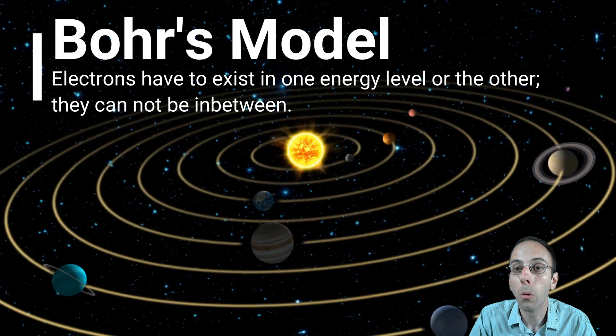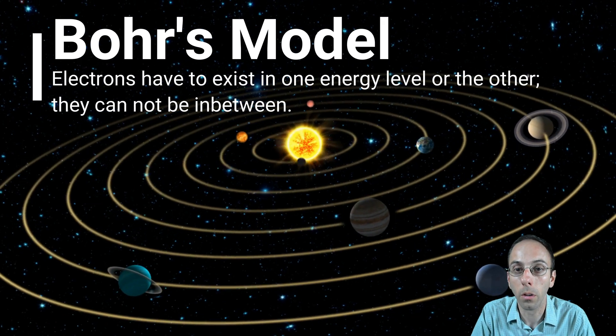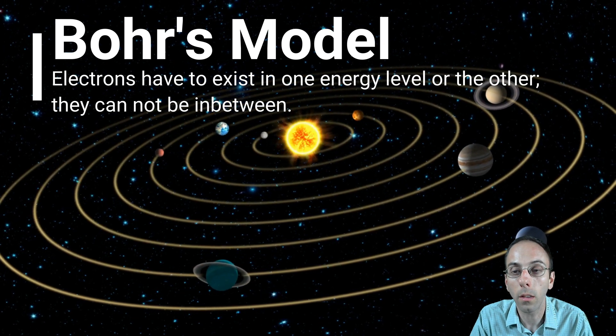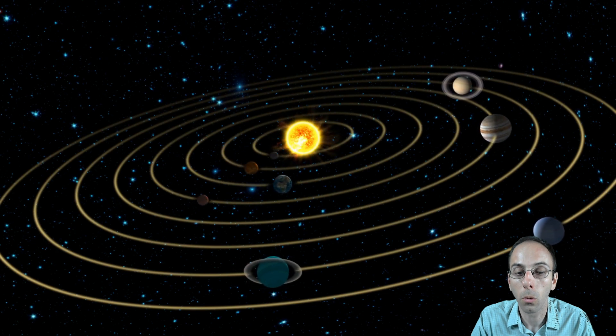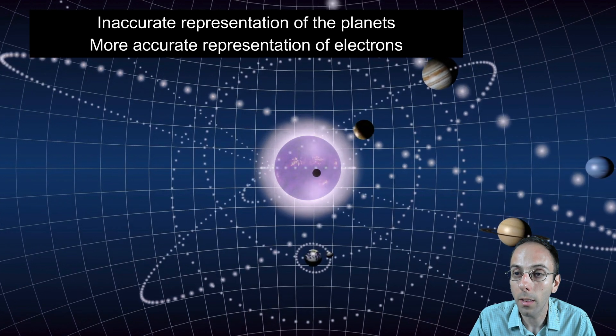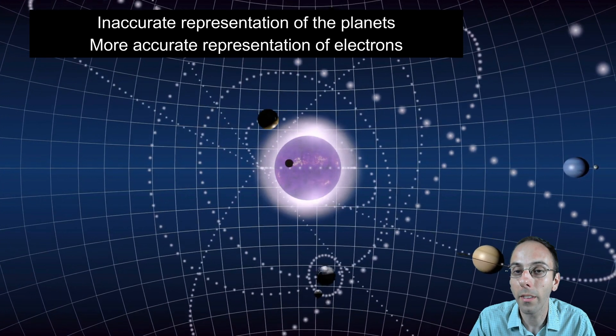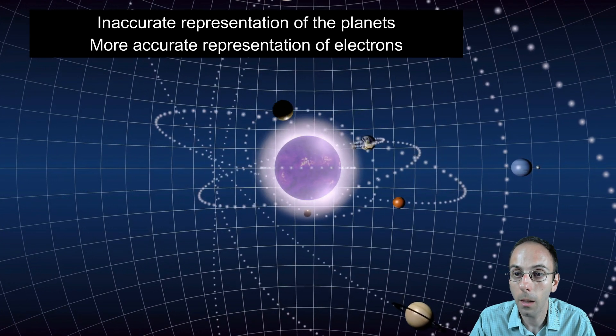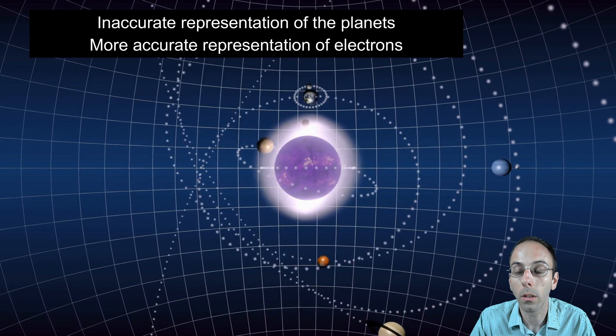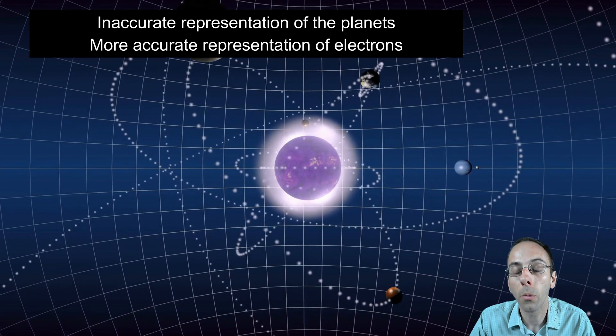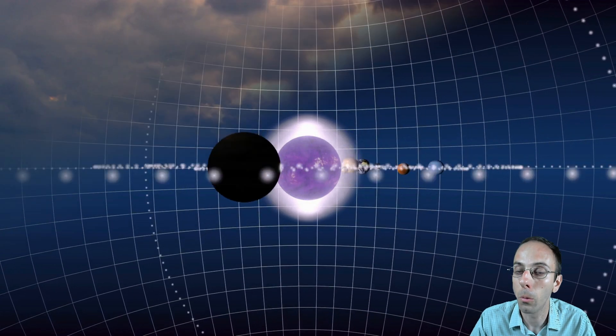Now in the Bohr's model, electrons would have to exist in one energy level or another. They can't exist in between, just like planets can't be in between the orbits. They have to be in one of those fixed orbits around the sun or the nucleus. However, this is an inaccurate representation of the planets, as we see here. They don't behave quite like this, but it's a more accurate representation of how the electrons actually behave, because they're not in fixed one-dimensional orbits. They are going around the nucleus in this kind of three-dimensional type form.